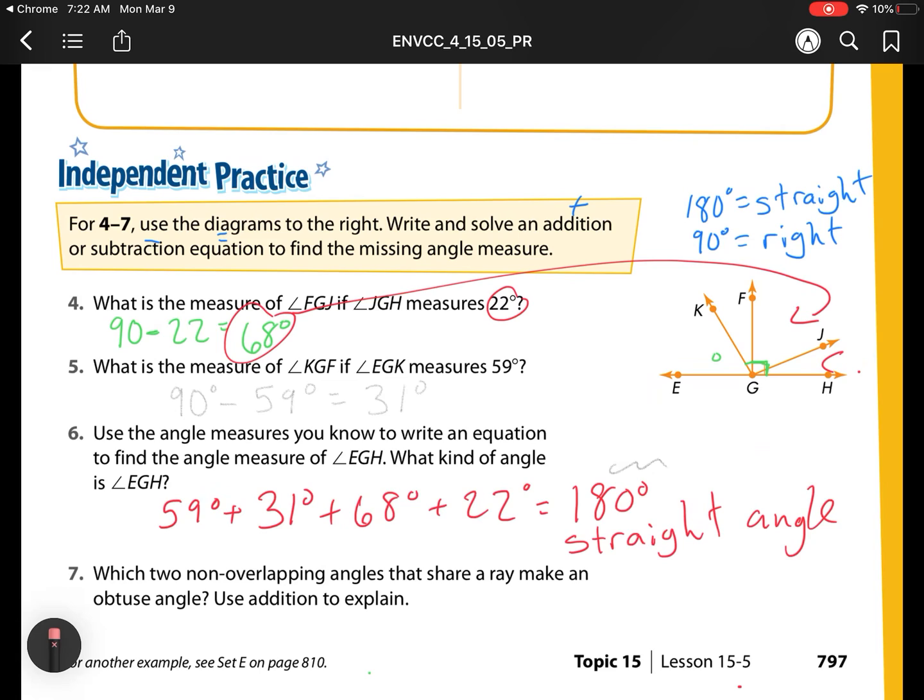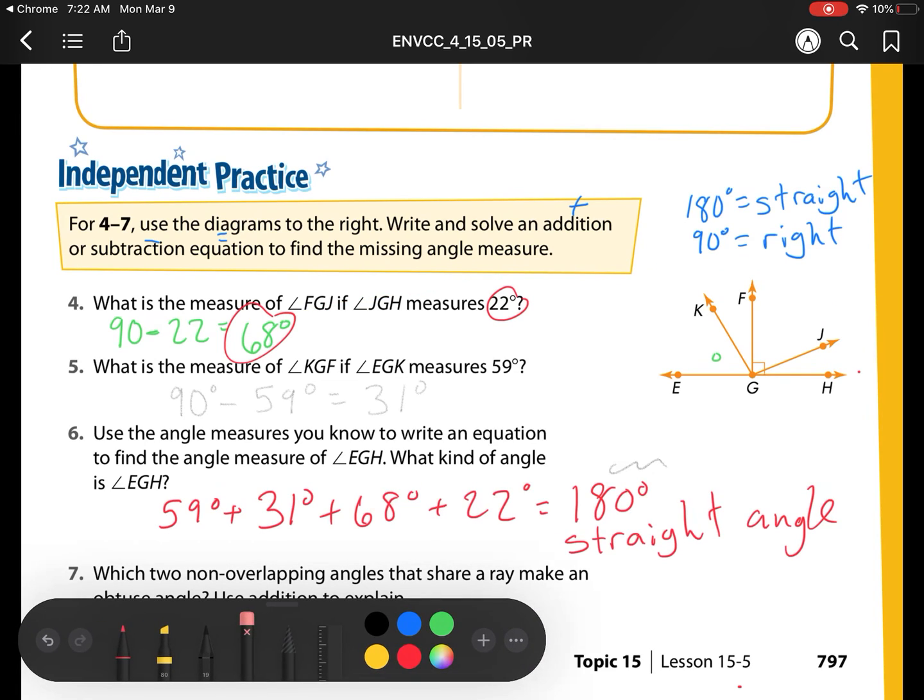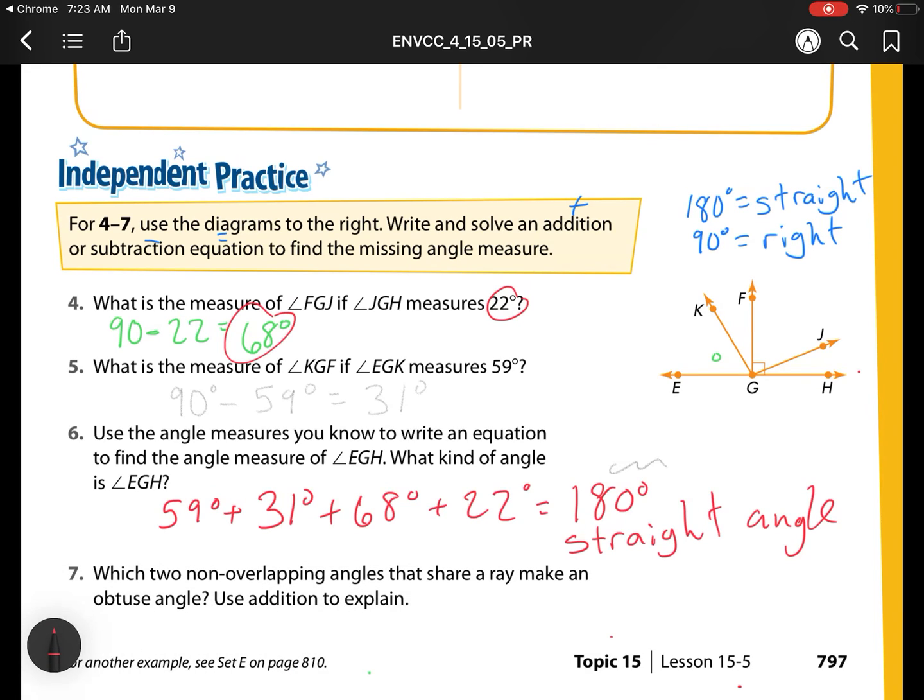So now, number 7. Number 7 says, which two non-overlapping angles that share a ray make an obtuse angle? Use addition to solve. So I want my angles that do not overlap. They need to share a ray. So we have KGF. There's one angle. And then we have FGJ. So where are my two angles? We have angle KGF and angle FGJ.